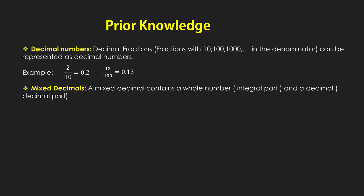For example, seventy-eight point four two: in this number, seventy-eight represents the integral part, the dot refers to the decimal point, and four two represents the decimal part.